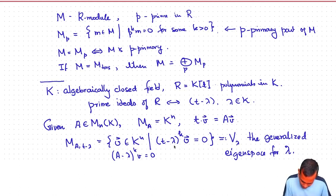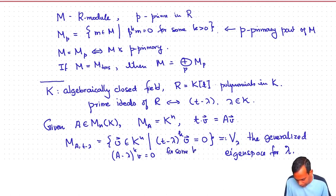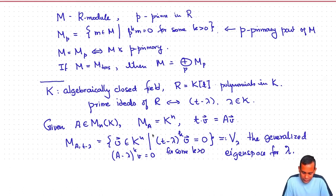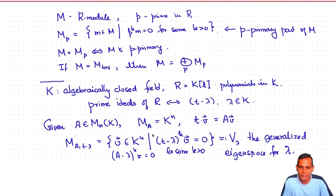For some k greater than 0: if you take the space of all vectors v in K^n such that (T − λ)^k · v = 0 for some k > 0, you get something larger than the eigenspace for λ. It's called the generalized eigenspace.